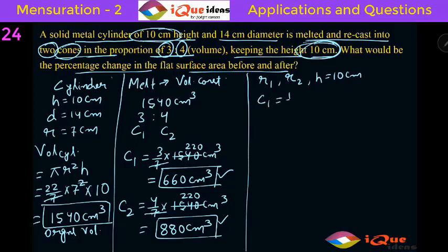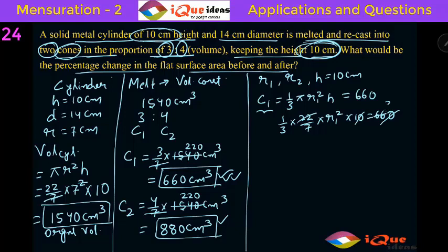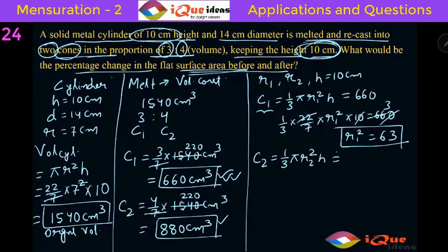The volume formula for the first cone is 1 by 3 Pi R1 square into H equal to 660. So 1 by 3 into 22 by 7 into R1 square into 10 equals 660. The zeros cancel, 22 cancels 66 three times, giving R1 square equal to 3 into 7 into 3, that is 63. For the second cone: 1 by 3 into 22 by 7 into R2 square into 10 equals 880. Again zeros cancel, 22 cancels 88 four times, giving R2 square equal to 4 into 7 into 3, that is 84.